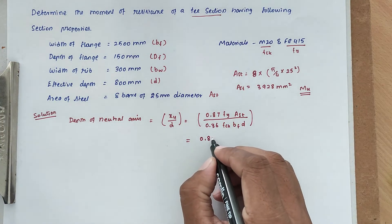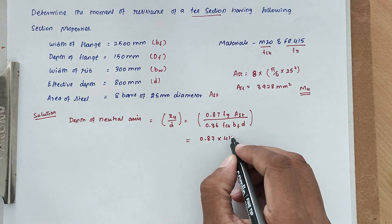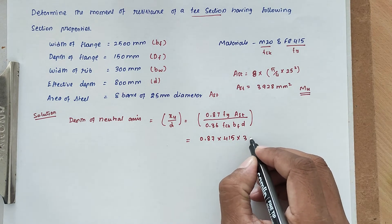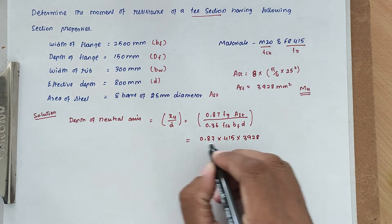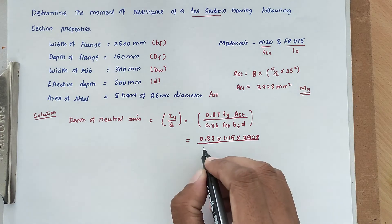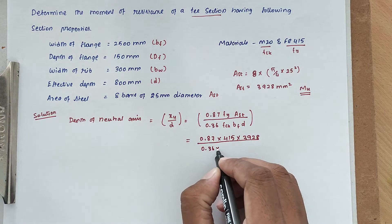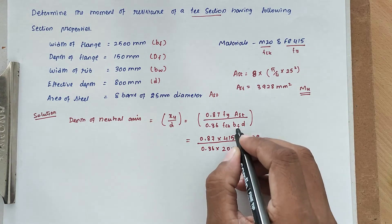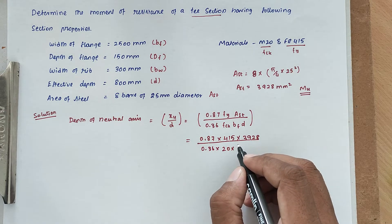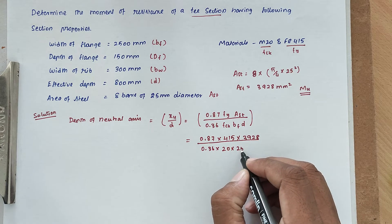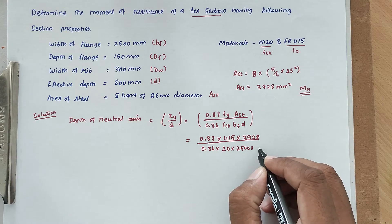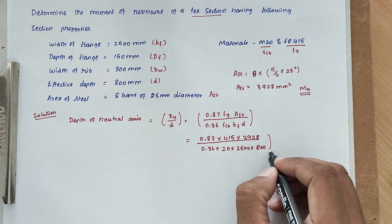So now 0.87 into FY value is 415 into AST value we found, 3928, divided by 0.36 into FCK is 20, then BF the width of flange is 2500 into depth is 800 mm.